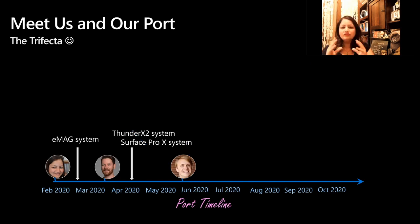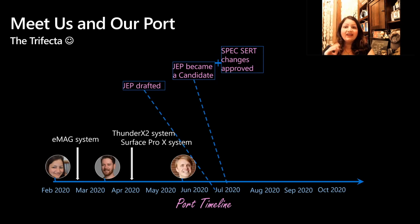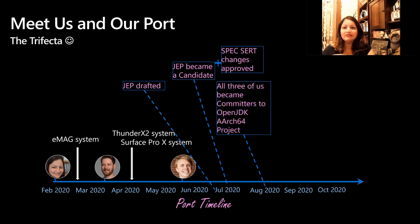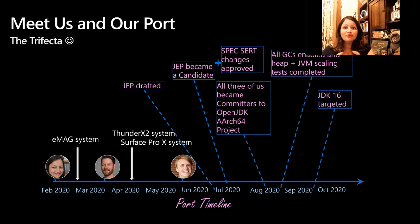Now let's look at the JEP process. JEP — the Java Enhancement Proposal — is a very important step for contributions of this magnitude. We started by drafting the JEP in July. It quickly became a candidate, thanks to great collaboration from Oracle, and reviews were done very quickly. At the same time, SPECjbb changes were approved by the spec committee. By August, all three of us were commenters in the OpenJDK ARM64 project. By end of August, we enabled all garbage collectors — G1GC, ZGC, and Shenandoah — and did scaling tests on ThunderX2 for all three. By end of September, our port was targeted for JDK 16, and we are now integrated into OpenJDK.